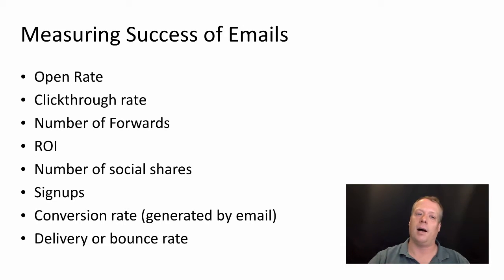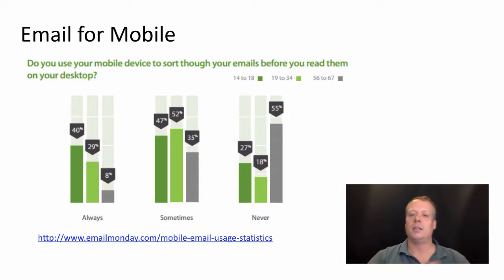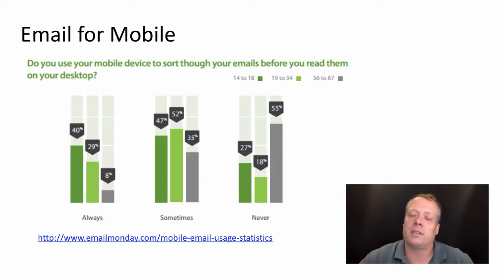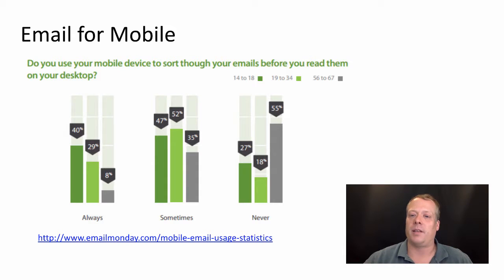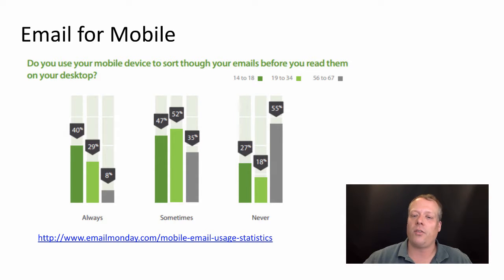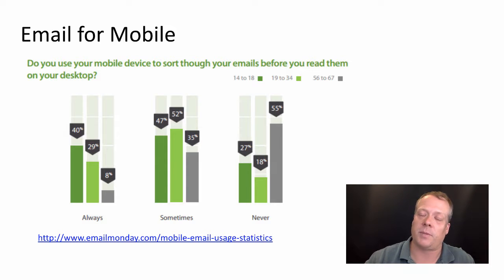Mobile devices are becoming the primary way people sort through their emails. About forty percent of people between the ages of 14 and 18 say they use a mobile device as their primary way to sort through emails all the time, forty-seven percent say sometimes, and twenty-seven percent say never. In general, there is high use of mobile devices to access email on a regular basis.